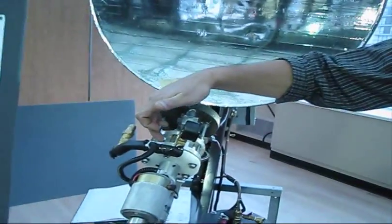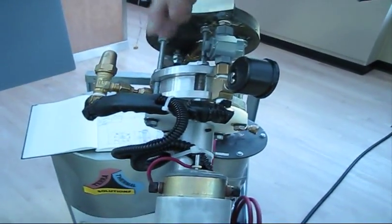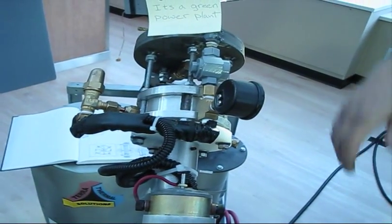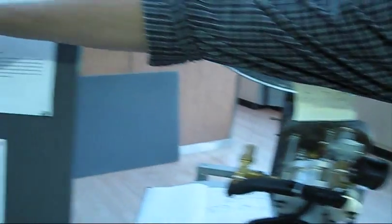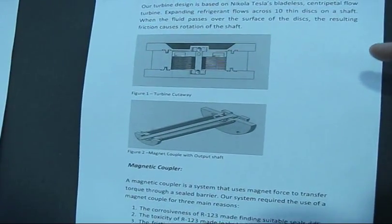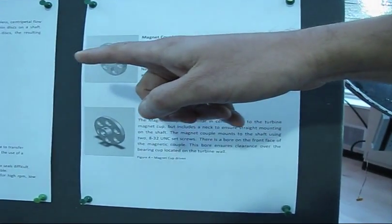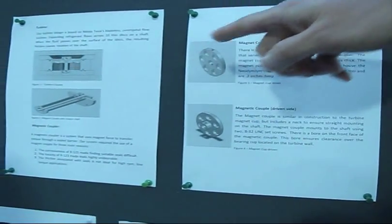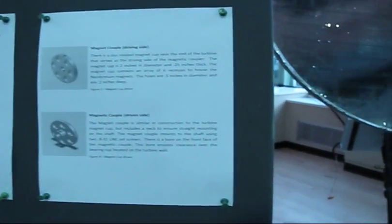This is modeled on a Tesla turbine invented by Nikola Tesla in I think 1909. There's a cutaway schematic of what it looks like inside. It's a series of disks. It uses principal boundary friction to make mechanical force to transmit and drive the generator.